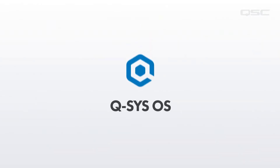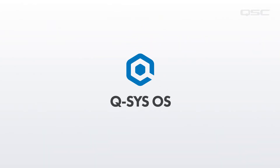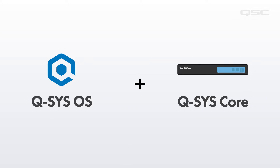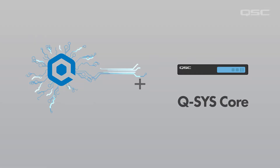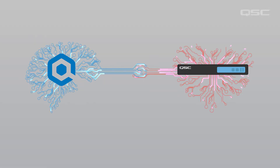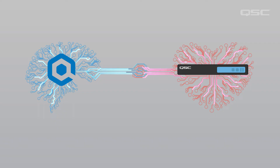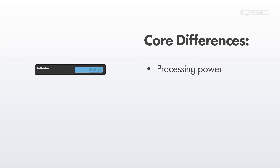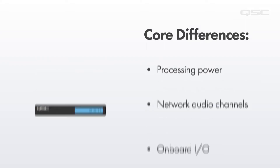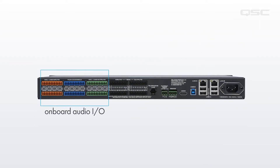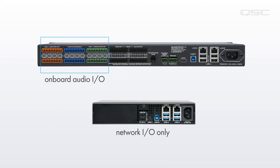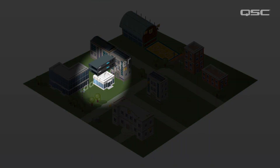Practically speaking, the Q-SYS OS needs a processor, which is where the Q-SYS Core comes in. If the Q-SYS OS is the brain of your system, then the core processor is the heart. There are a variety of models of Q-SYS cores that vary in the amount of processing power they offer, the number of network audio channels they can handle, as well as differences in their available onboard I/O. Some models have onboard audio inputs and outputs, others don't. Some are better suited for centralized processing, while others are better for in-room processing.